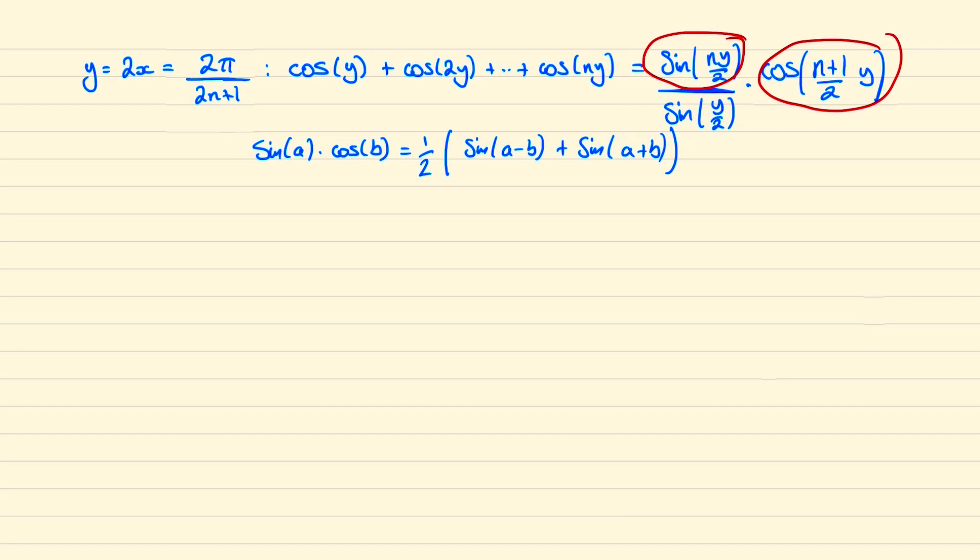Now for our purposes, we're considering when a is ny over 2 and b is n plus 1 over 2y. We'll have an easier time if we just write b as ny over 2 plus y over 2, and so a minus b will just become negative y over 2 and a plus b will become ny plus y over 2.